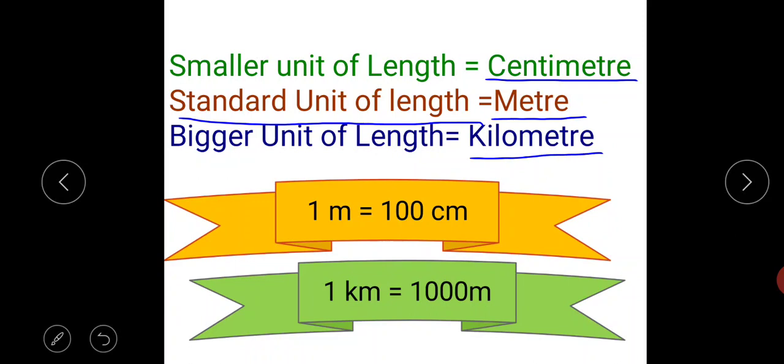Now you have to remember one thing. Meter is greater than centimeter. So one meter is equal to one hundred centimeters. Similarly, kilometer is greater than meter. So one kilometer is equal to one thousand meters.